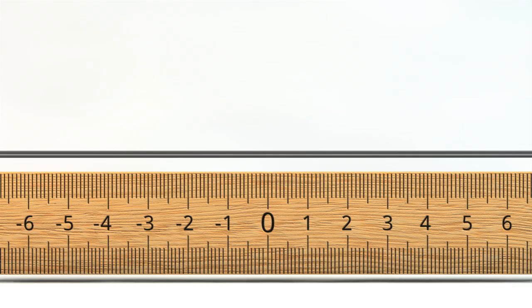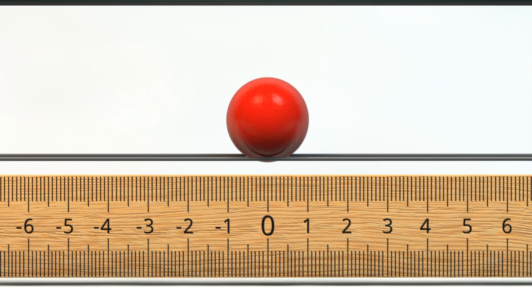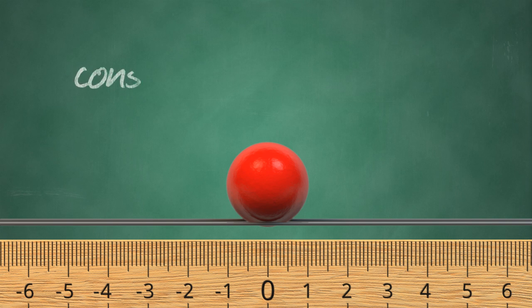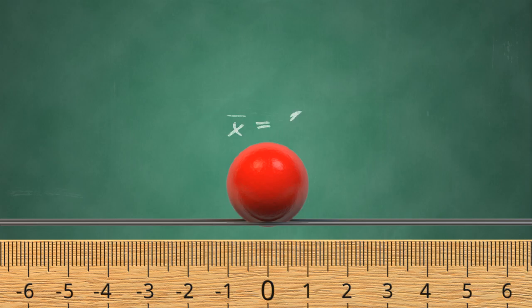Let's start by looking at a red plastic ball. Right now the ball isn't moving, so we can say it has constant position, denoted by x. Let's call this point the starting point, or position equals zero.